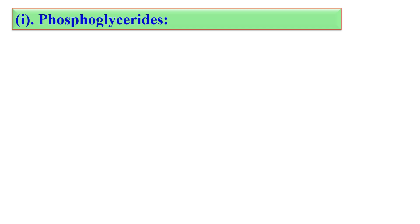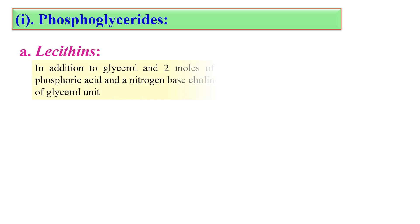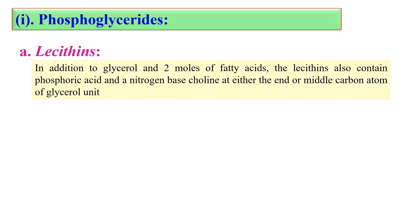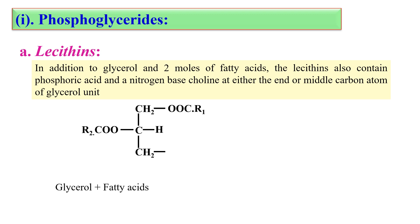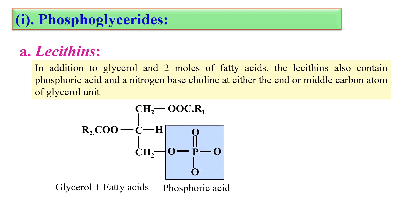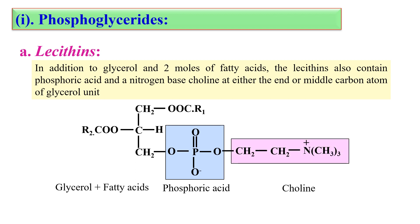Within the phospholipids, the first subcategory is phosphoglycerides. These include lecithins, cephalins, and plasmogens. Lecithins are widely distributed in nature — various oils like soybean contain lecithin. Structurally, they contain glycerol, two molecules of fatty acid, and phosphoric acid. In the lecithin case, this phosphoric acid is further attached with a choline molecule. So when glycerol and phosphoric acid are attached with choline, that is known as lecithin.